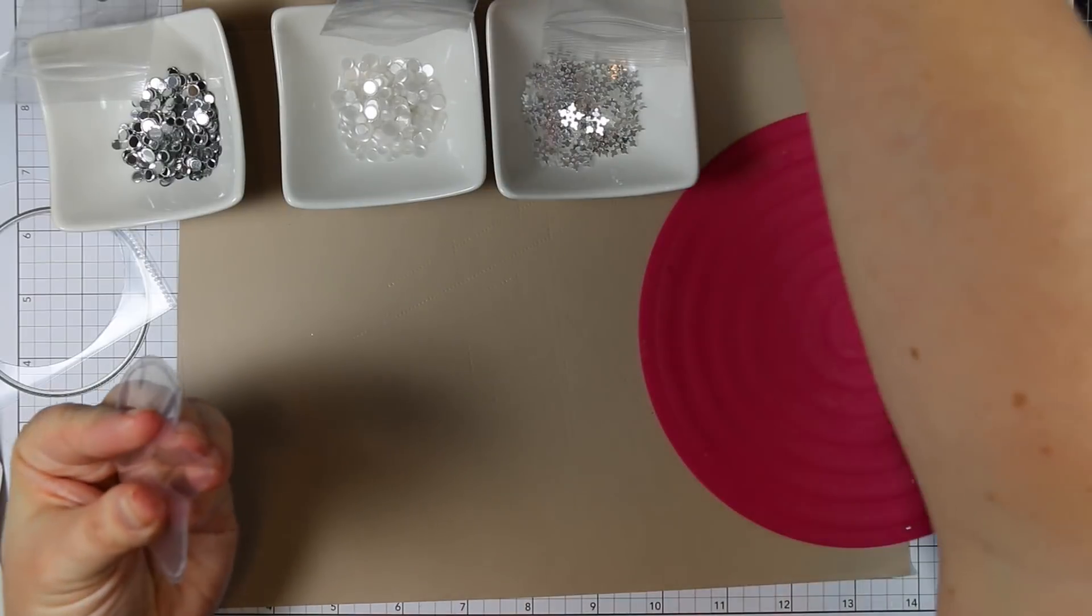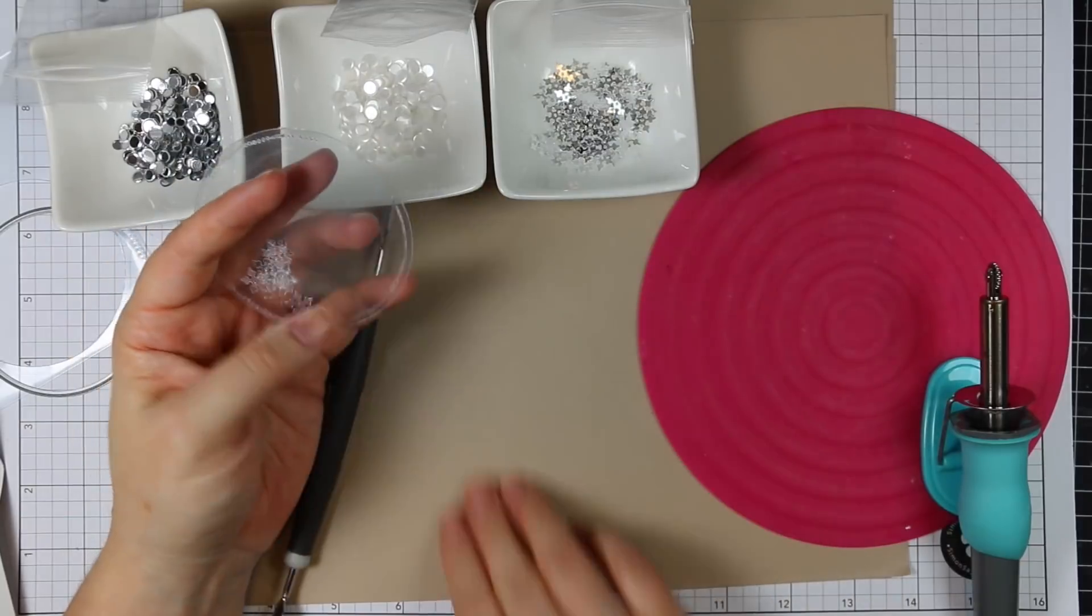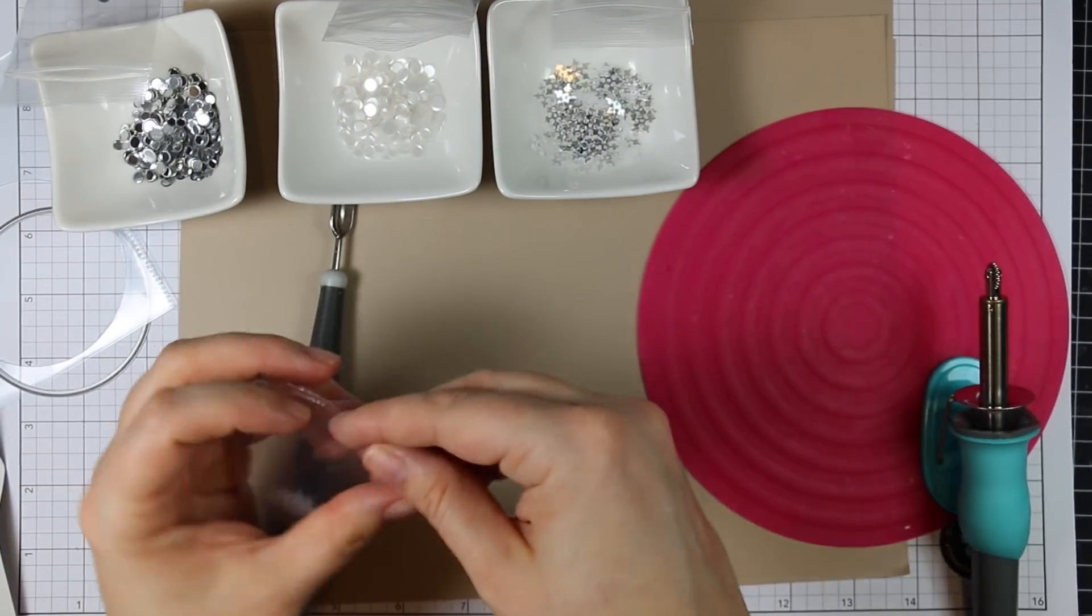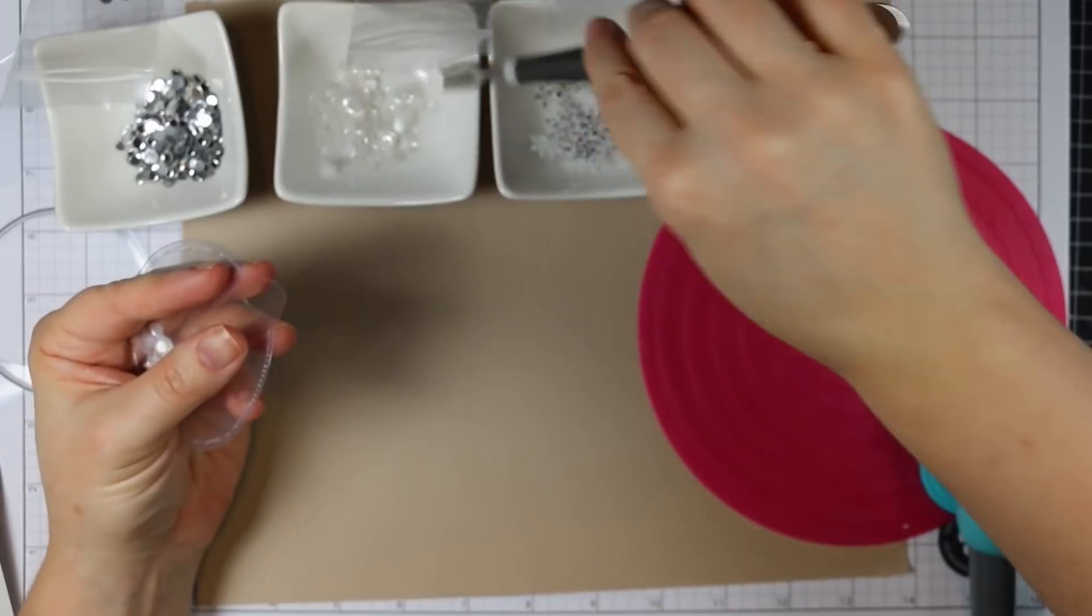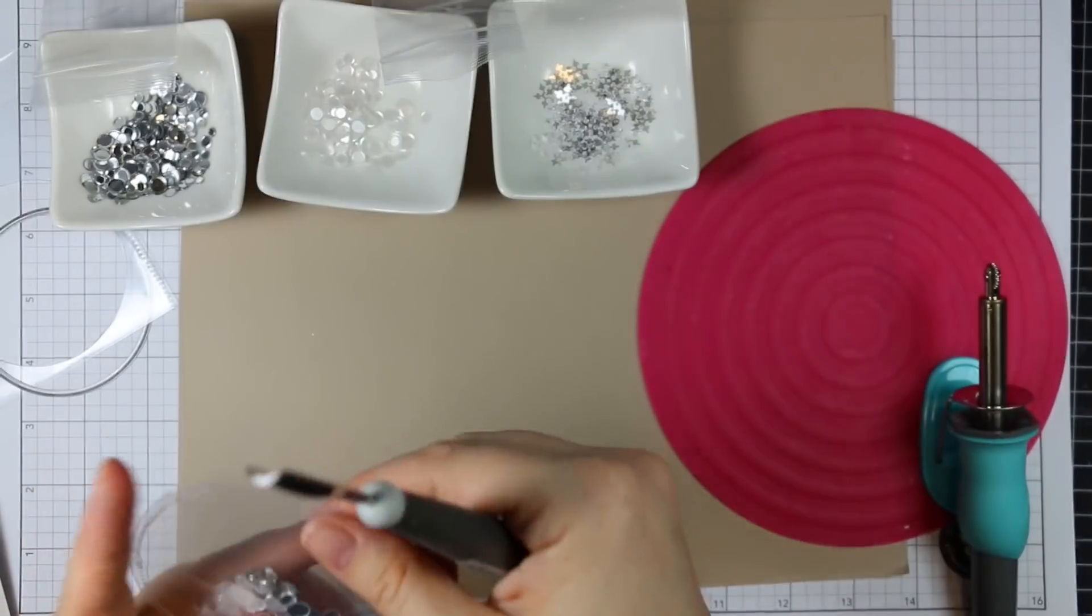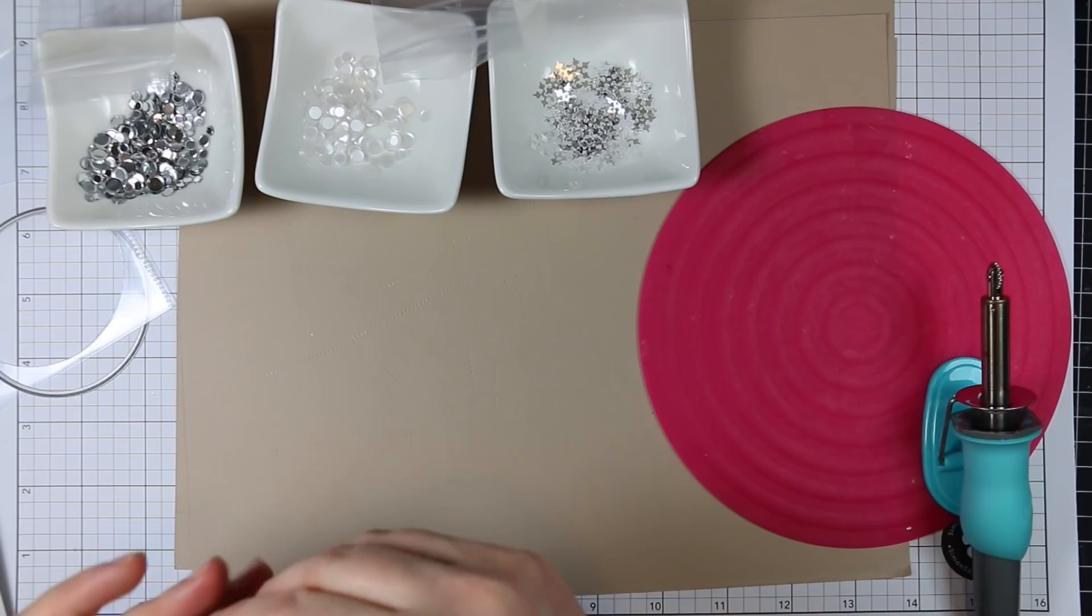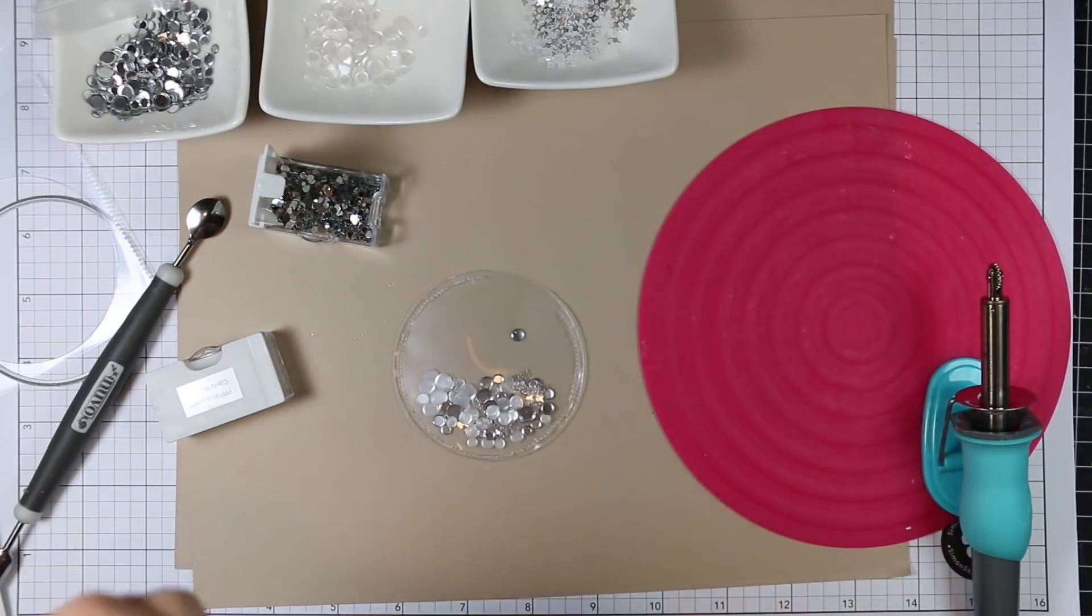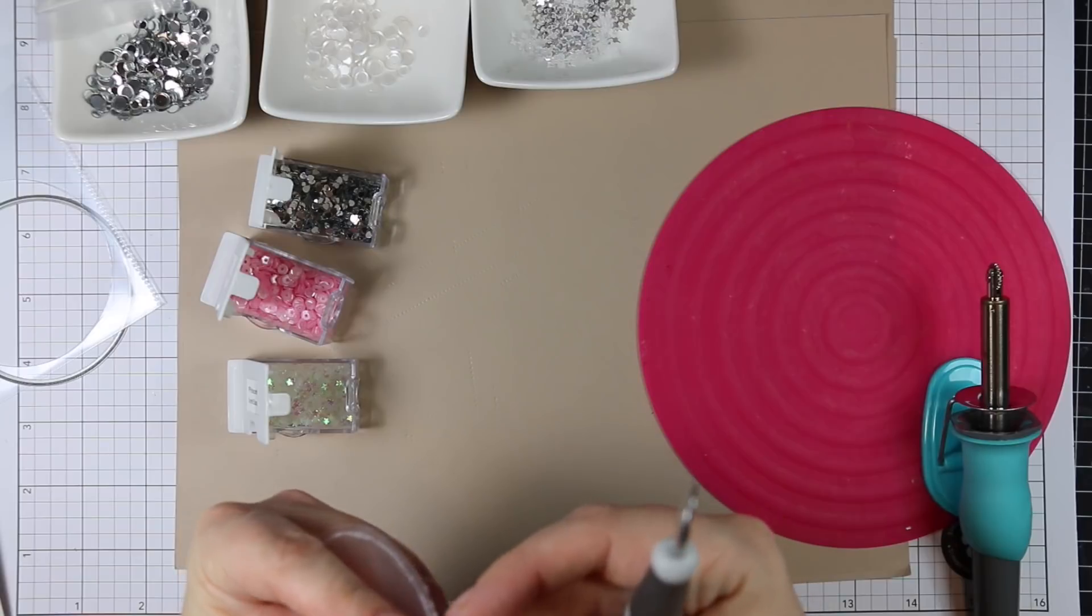Then I have three different Pretty Pink Posh sequin mixes here and I'm just pouring them into these little dishes. I kept these little ceramic dishes from an entertaining set I used to have because they were great for my craft desk. So I just poured those out and I'm putting them into the opening of this little circular shaker pouch. I've got the sparkling clear snowflakes, the metallic silver confetti, and the marshmallow confetti.